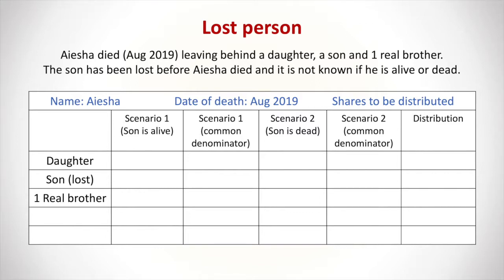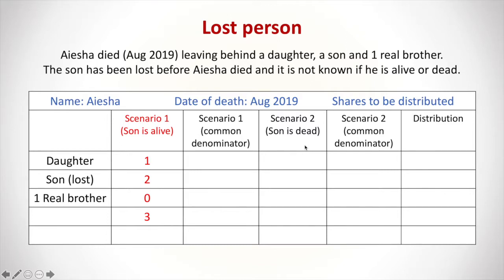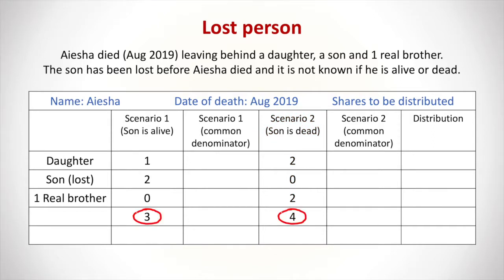In scenario one, since the son is alive, the son gets two parts and the daughter gets one part in a two-to-one ratio, for a total of three shares. The real brother gets nothing since the son is alive. In scenario two, the daughter gets half since the son is not present, and the remaining half goes to the real brother. The total for this calculation is four shares. We are now dealing with two denominators: three and four. We find the LCM, which is 12.